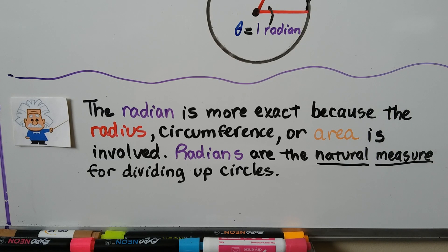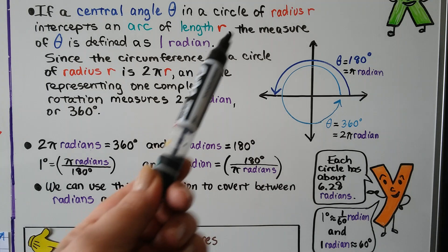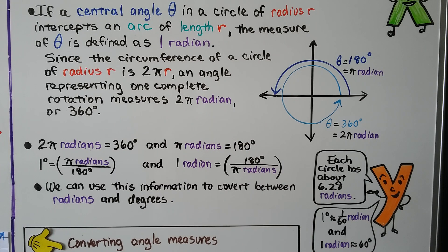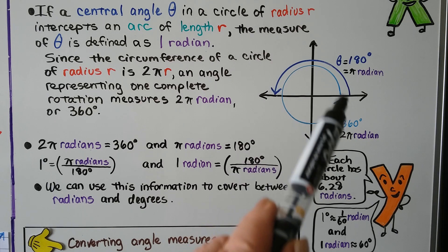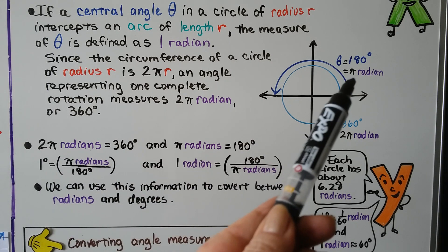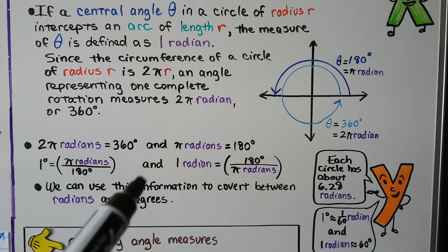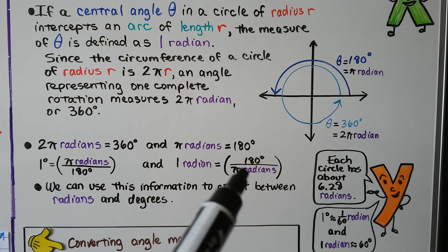The radian is more exact because the radius, circumference, or area is involved, and radians are the natural measure for dividing up circles. If a central angle theta in a circle of radius r intercepts an arc of length r, the measure of theta is defined as 1 radian. Since the circumference of a circle of radius r is 2πr, an angle representing one complete rotation measures 2π radians, or 360 degrees. So 2π radians = 360°, π radians = 180°, 1 degree = π/180 radians, and 1 radian = 180°/π.